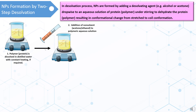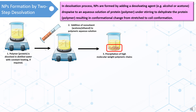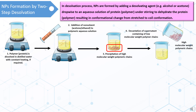This addition of non-solvent to the polymeric aqueous solution results in precipitation of high molecular weight polymeric chains. The precipitate is allowed to settle down, and the supernatant containing low molecular weight polymeric chains is decanted, leaving the precipitate of high molecular weight polymeric chains at the bottom of the beaker.